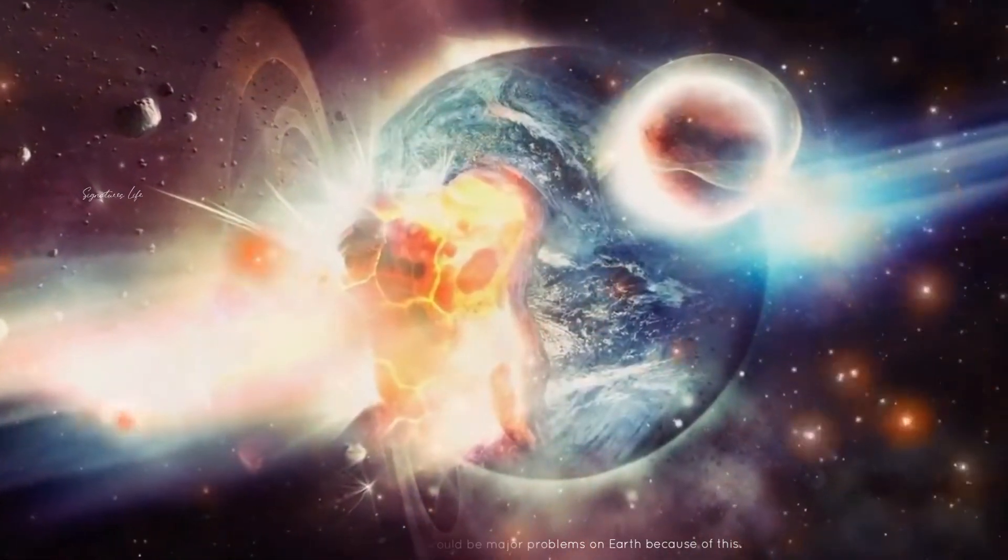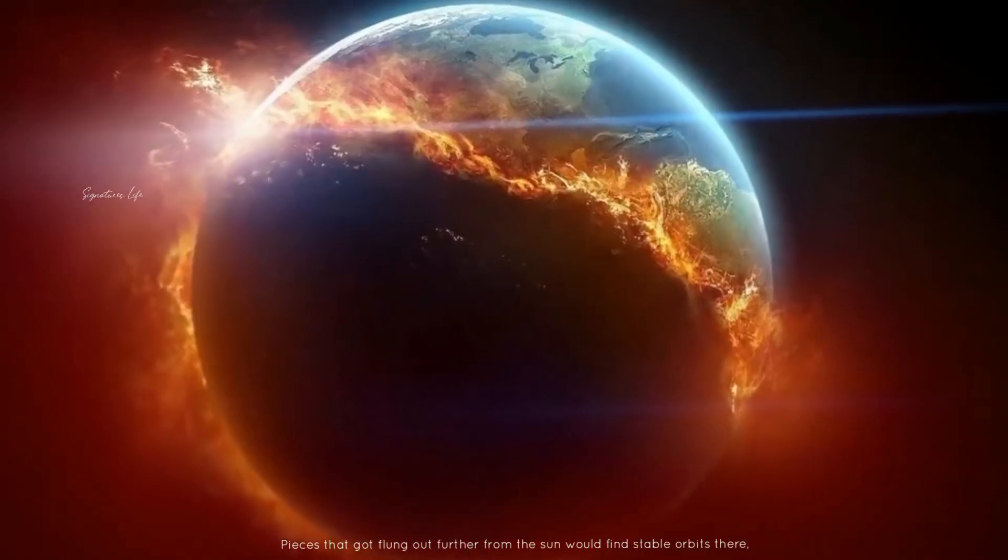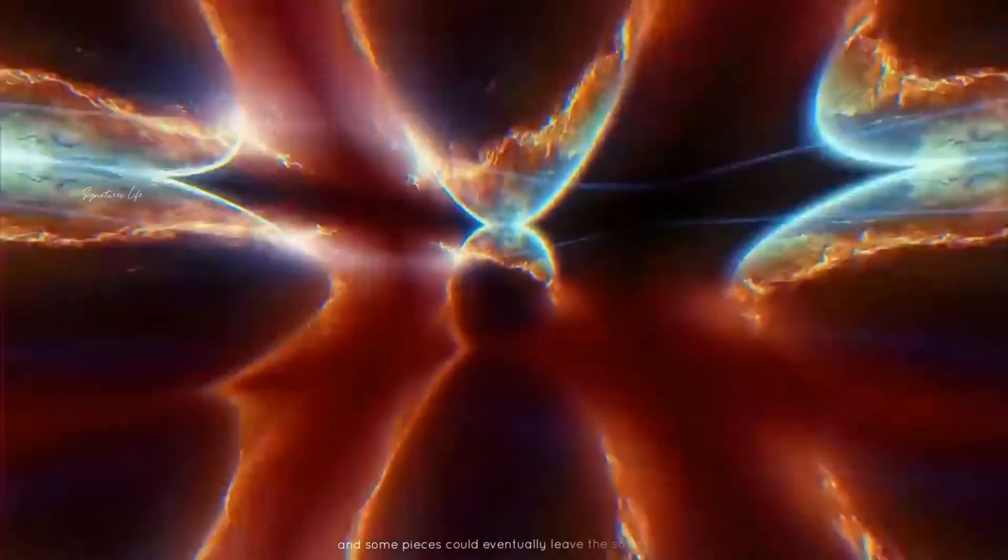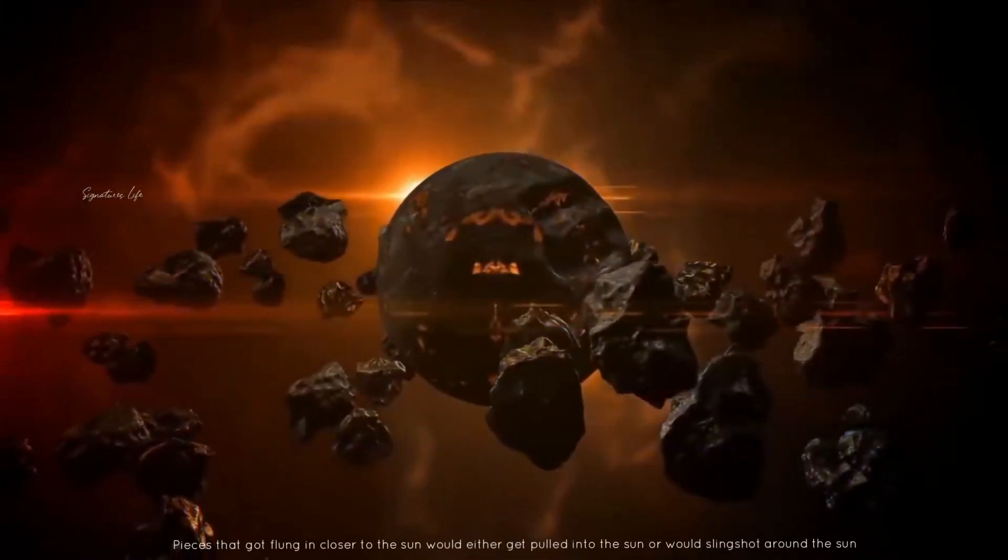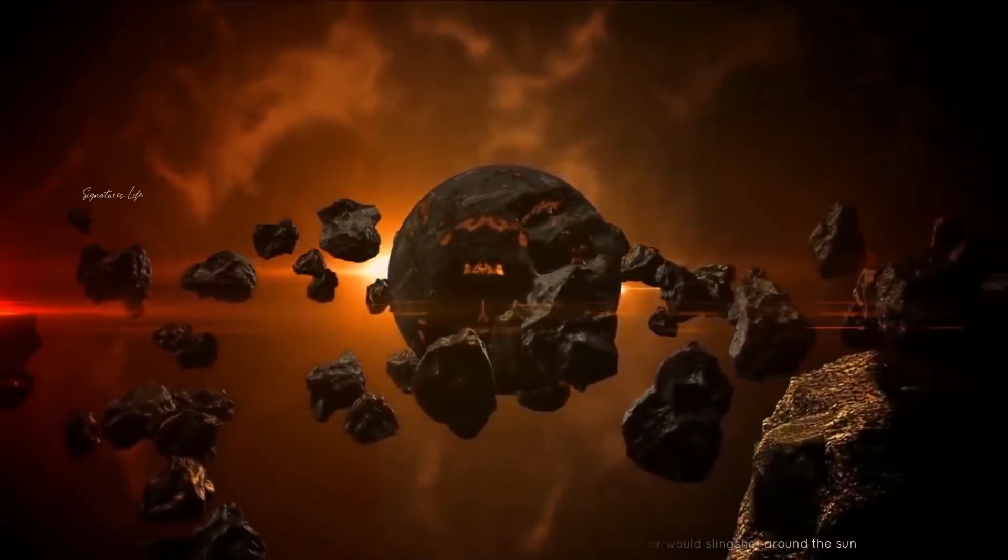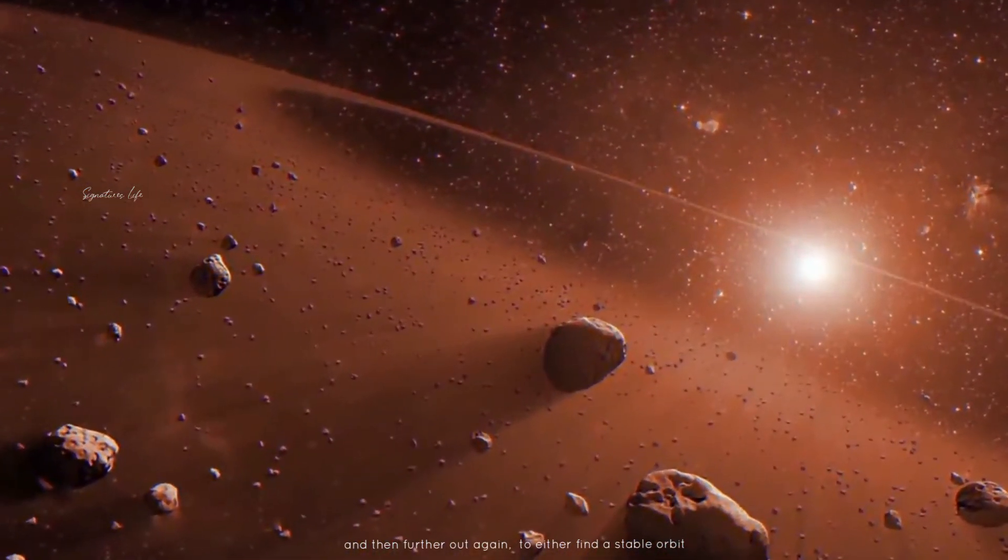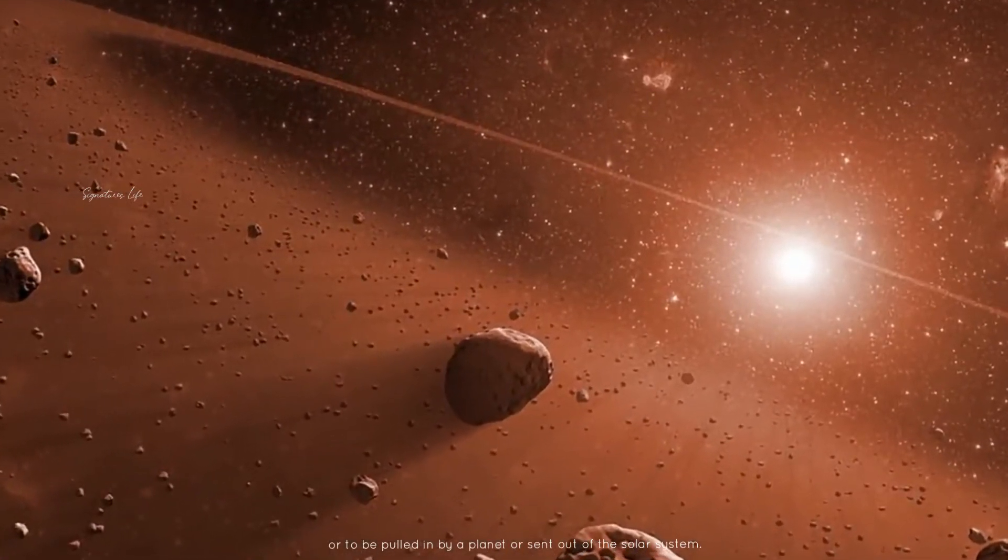Because of this, pieces that got flung out farther from the sun would find stable orbits there, and some pieces could eventually leave the solar system. The pieces that got flung in closer to the sun would either get pulled into the sun or would slingshot around the sun and then farther out again to either find a stable orbit or to be pulled in by a planet or sent out of the solar system.